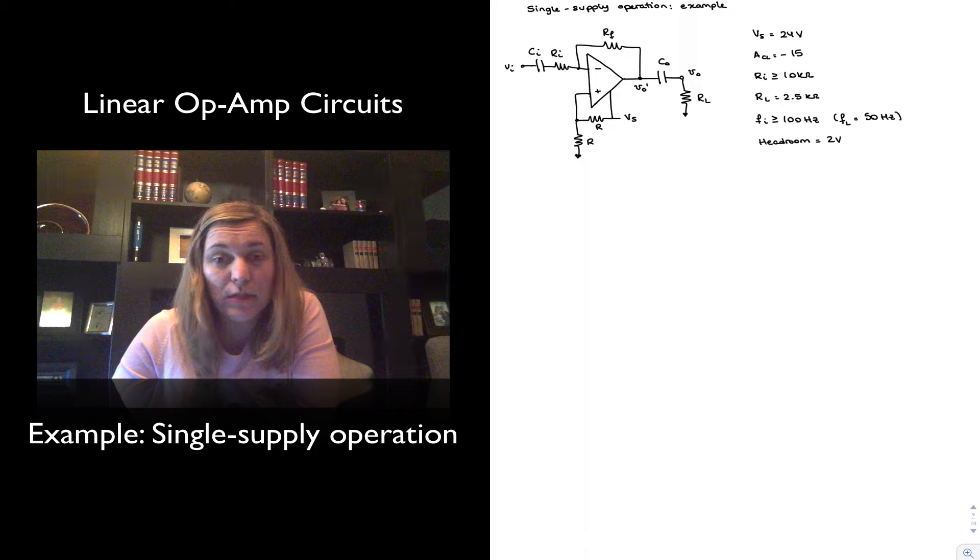The range of frequencies of interest for our input signal is greater than or equal to 100 Hz. And we are going to set by design our low corner frequency to 50 Hz, so intentionally lower than that lowest frequency of interest. And then our headroom is 2 volts. The headroom is just how far away we have to stay from the supply voltages, both typically with the input voltages but also with our output voltage.